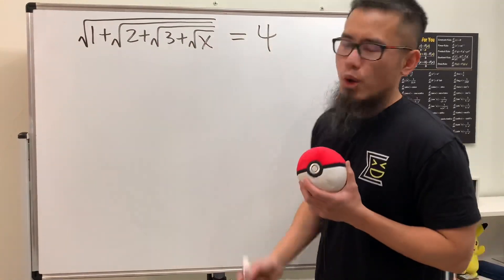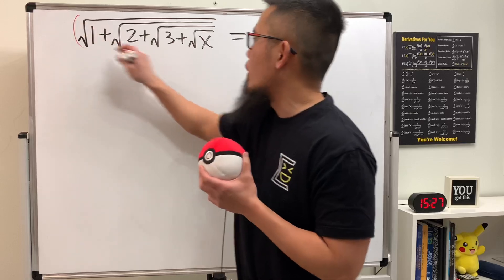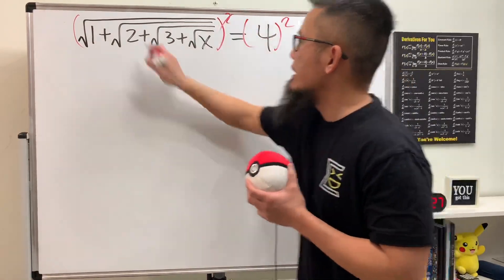Okay, we're going to solve this very nasty square root equation. First, we're going to square both sides so that we can get rid of the outside square root. So you see this, then that will cancel.